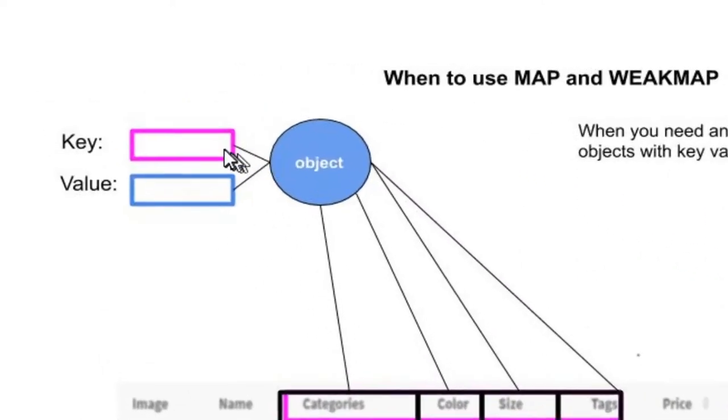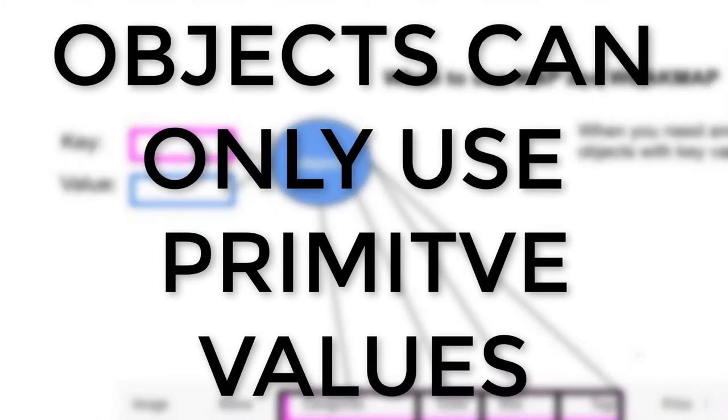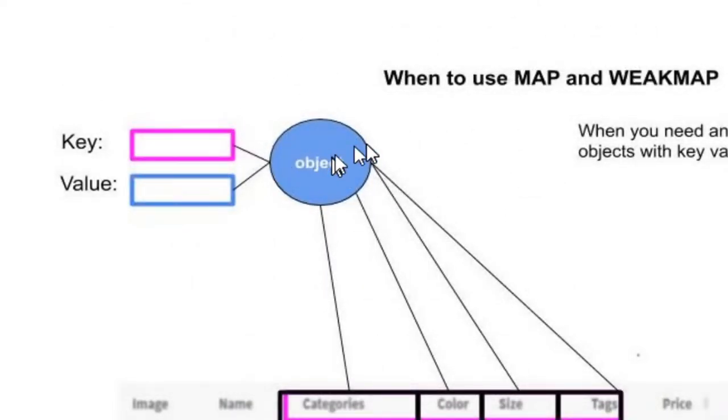But first let's go ahead and discuss what an object is. An object is key-value pairs. We can have as many key-value pairs as we want in an object, but we're limited because we cannot loop through those key-value pairs without additional functionality, and we cannot use anything such as objects or arrays as a key value.